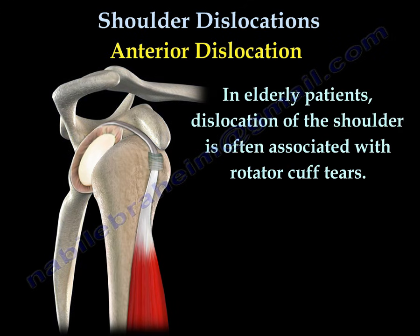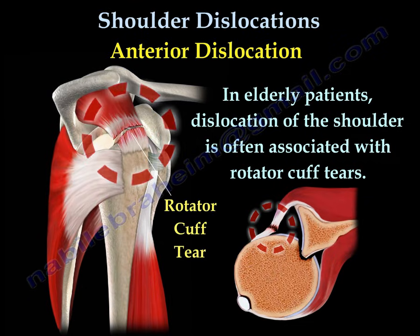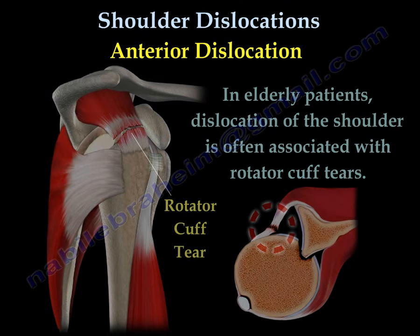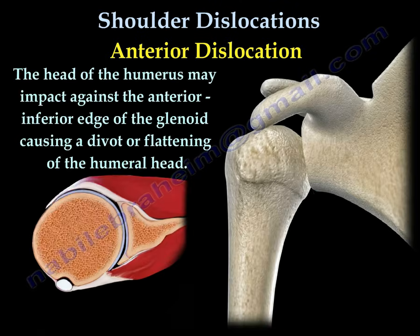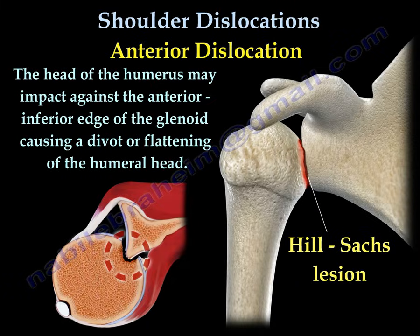In the elderly patient, dislocation of the shoulder is often associated with a rotator cuff tear. You can see here in the elderly patient how the cuff is torn. When the head of the humerus impacts against the anterior inferior edge of the glenoid, it causes flattening of the humeral head — we call it a Hill-Sachs lesion.